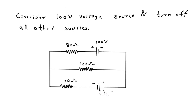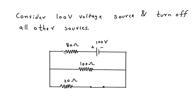Now, here we can see the positive terminal is here and negative terminal is here. The current flows from the positive terminal of the battery to the negative terminal. So the direction of this current will be like this. Let's say this is current I'.